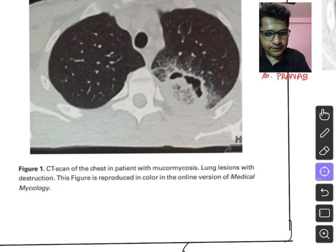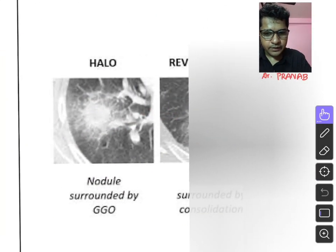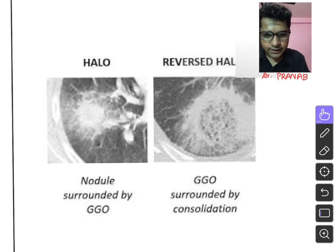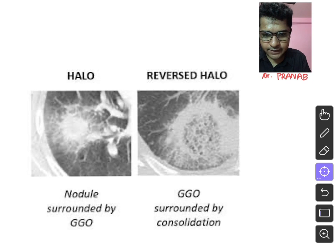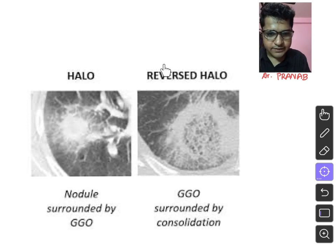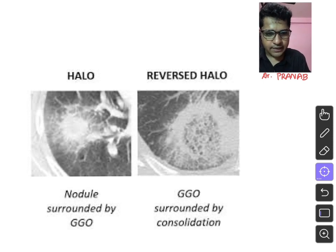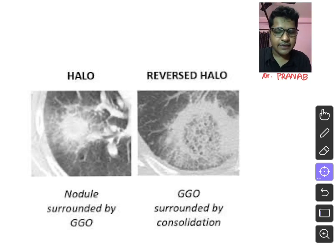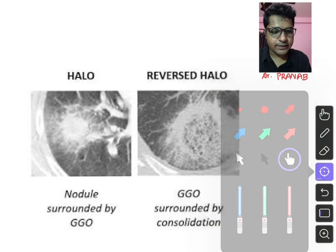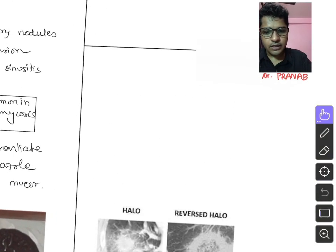Comparing the two CT patterns: the halo sign in aspergillosis shows a nodule surrounded by ground glass opacity. The reverse halo sign in mucormycosis shows ground glass opacity surrounded by consolidation. Destructive lung lesions and cavitation are important features of mucormycosis that differentiate it from pulmonary aspergillosis. These are the most important types of mucormycosis variant commonly seen in COVID-19 associated mucormycosis.